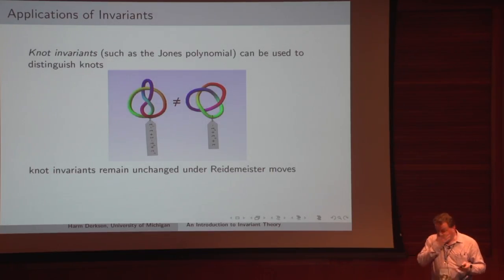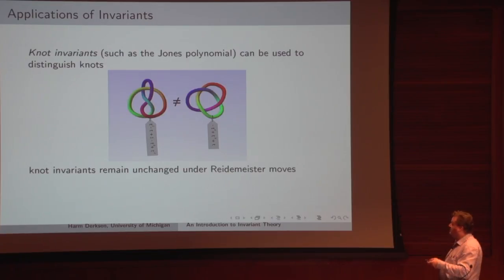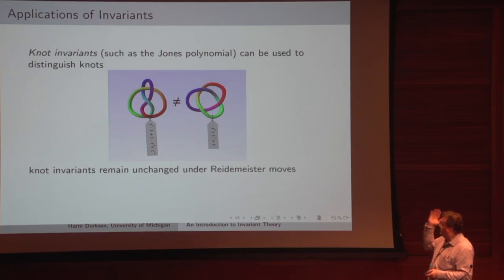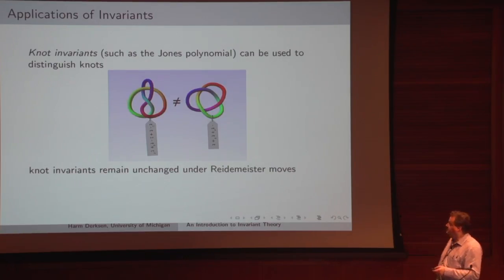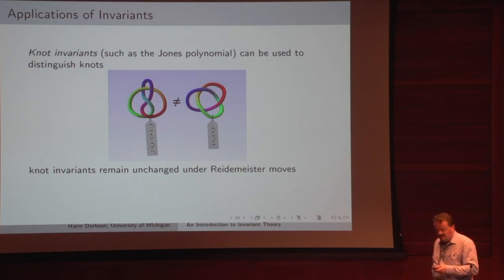There are also the famous knot invariants such as the Jones polynomial and Vassiliev invariants. You may have two pictures of knots — two-dimensional projections of some knots — and you want to know whether these are in fact the same knots in the sense that you can transform one into the other.